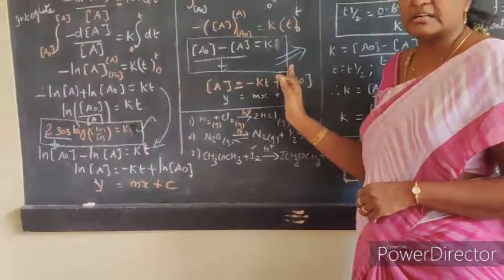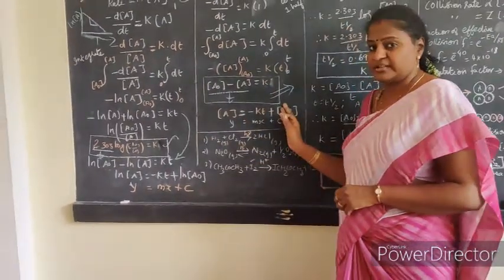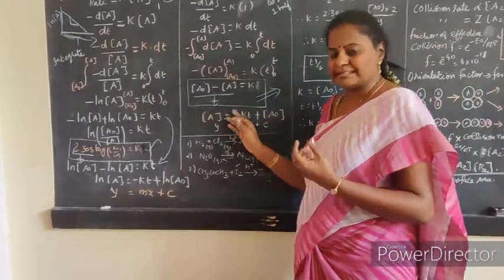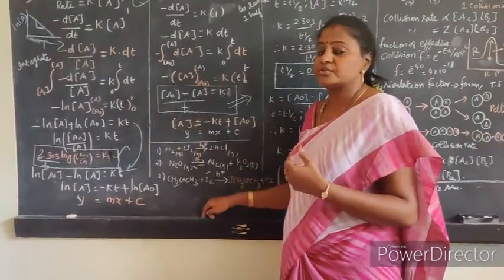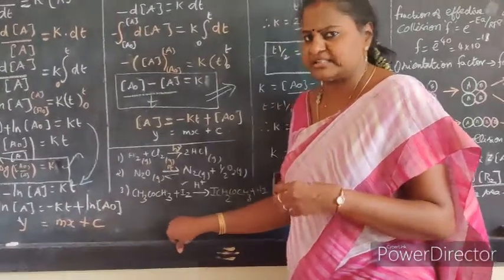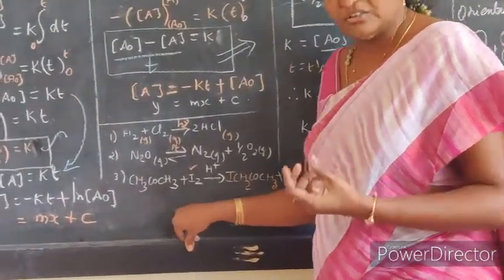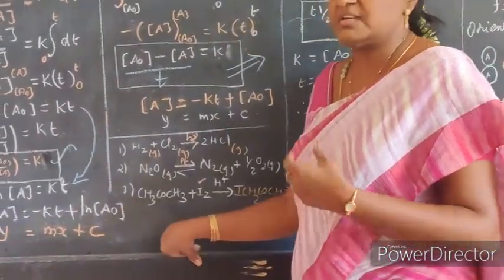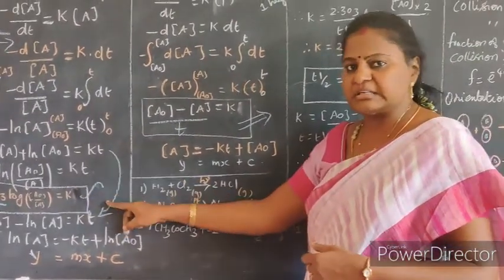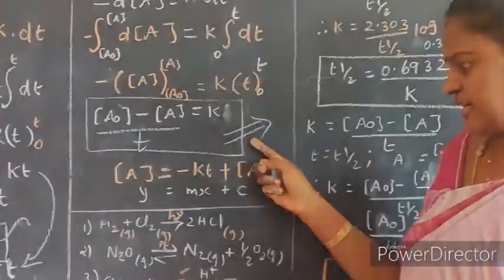We can theoretically derive the rate constant value for first order and zero order reactions. If we want to determine the rate constant experimentally, yes, we can do it also - by using titration measurement or conductance. Change in conductance value we can measure, or change in optical activity we can measure. In that way also we can find out the rate constant for first order and zero order reactions.